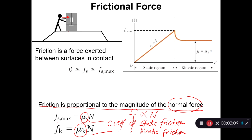The maximum static friction is Fs_max = μs × N, and the kinetic friction force is Fk = μk × N. We already know that Fs_max is greater than Fk. From the graph you can see that Fs_max is higher, while Fk remains constant throughout the motion at a slightly lower level.